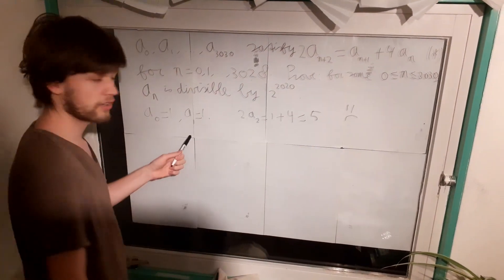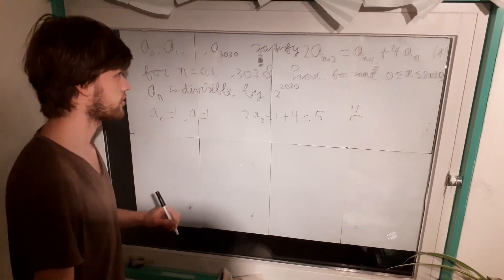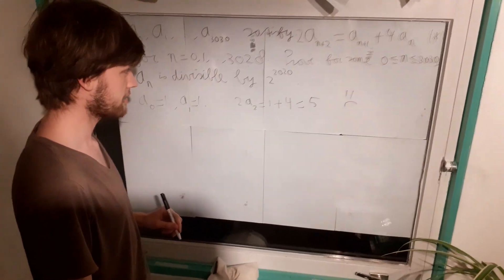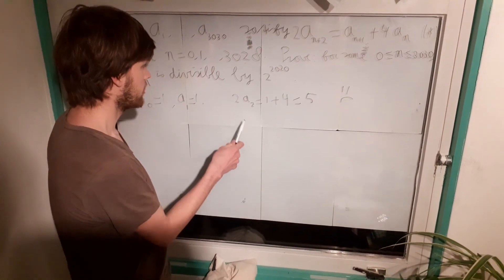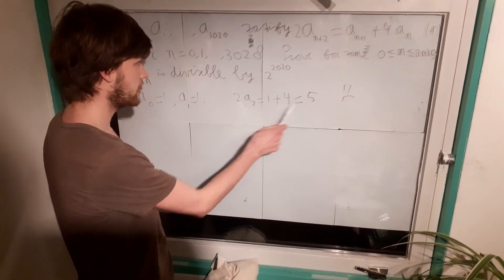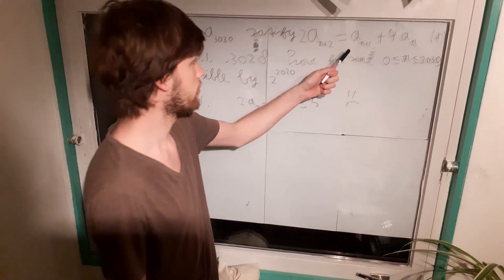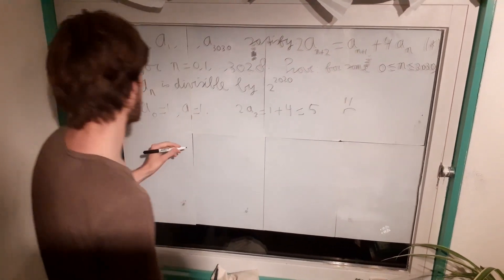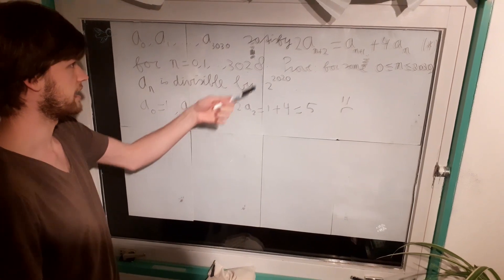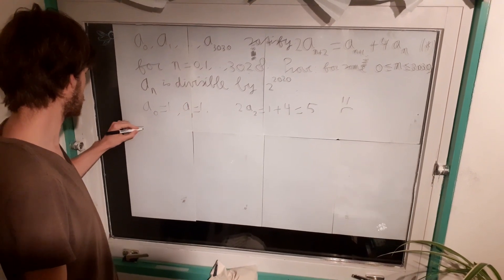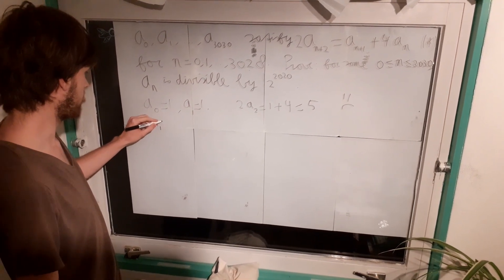Very sad. So this was actually not a valid way to start with the sequence, I guess. So where did we go wrong? We can't divide by 2 here. So I guess if we put n equals 0, we can conclude from the formula actually directly that a1 should be even. Otherwise, it will not work. So let's write it down: a1 even.